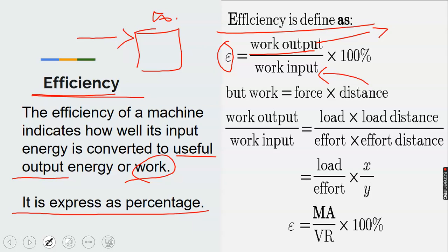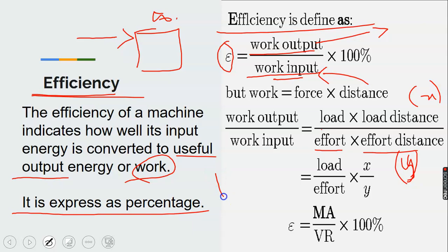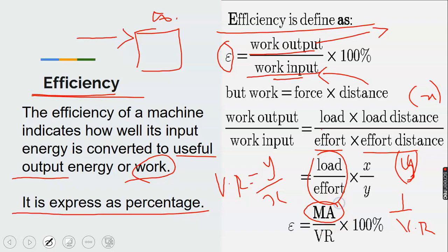If we use X to represent load distance and Y to represent effort distance, we know that velocity ratio equals Y over X — that is, distance moved by effort over distance moved by load. The work output over work input then becomes load times X over effort times Y, which is mechanical advantage times 1 over velocity ratio.